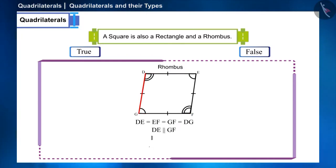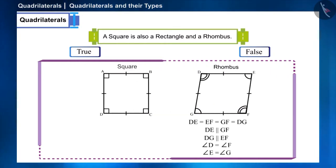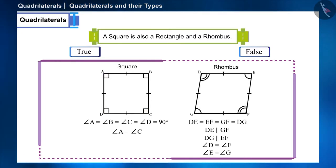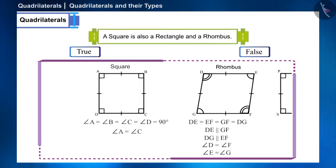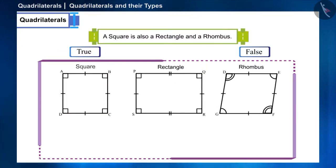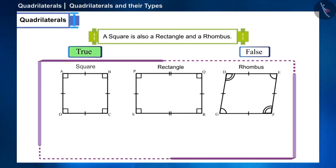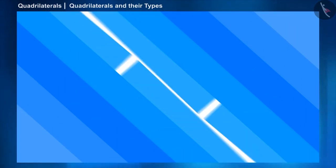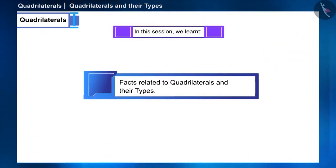All the sides of the rhombus are equal, its opposite sides are parallel, and its opposite angles are equal. Since all the angles of the square are 90 degrees, the opposite angles are also equal. Therefore the square can also be called a rhombus. A square has all the properties of a rectangle and a rhombus, so this statement is true.